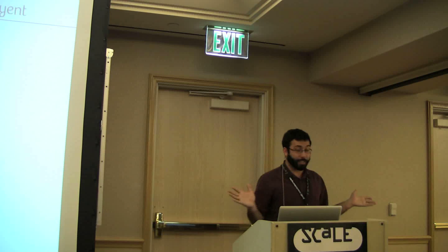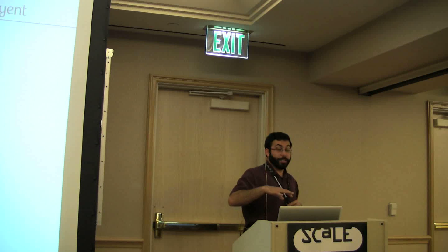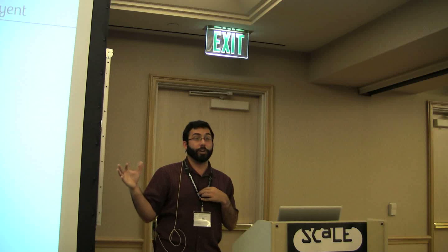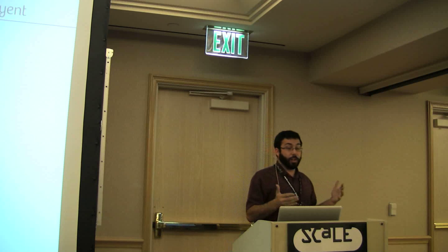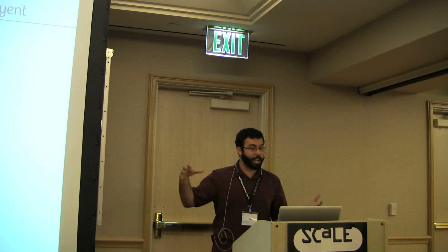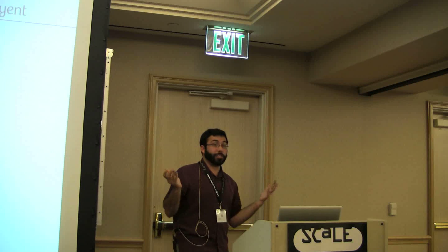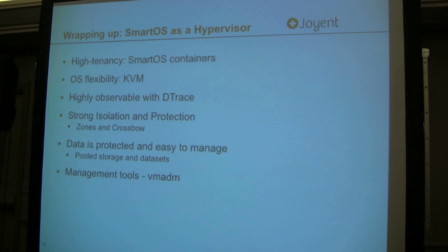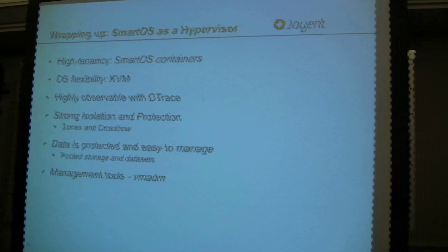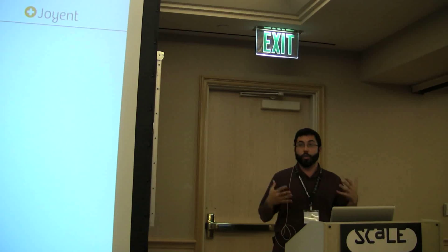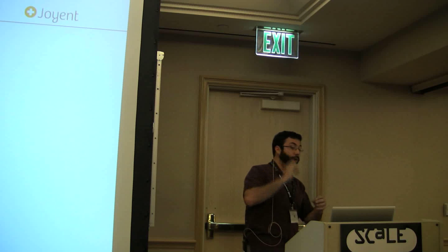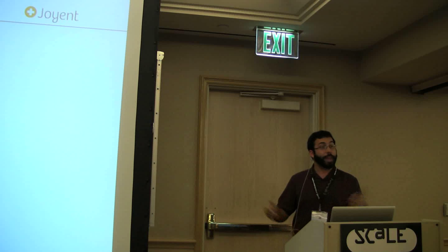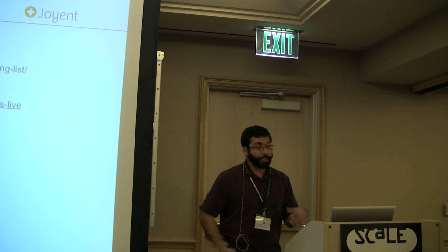Once you have those pieces, the kernel is just program text sitting in kernel address space — you can tweak it safely. Examples of what would be nice: a virtual FBT provider so you know every entry and exit of a function call in the guest kernel, a syscall provider so you know when syscalls are happening, and a pid provider. Wrapping up: SmartOS as a hypervisor offers OS virtualization for high tenancy, KVM for OS flexibility, DTrace observability, and strong isolation with zones, Crossbow, and ZFS. There are management tools like vmadm to make life easier.